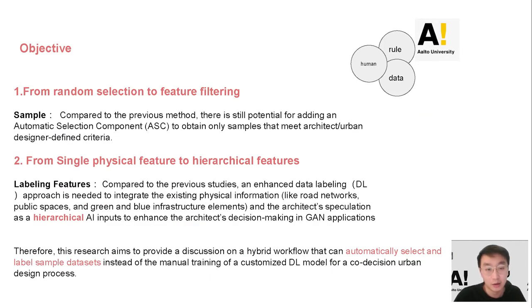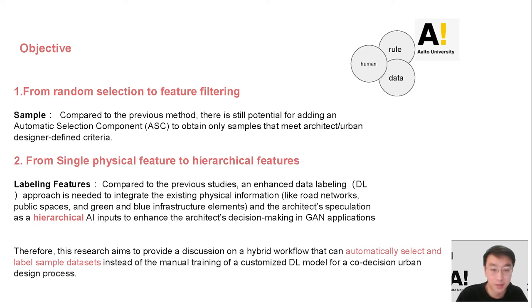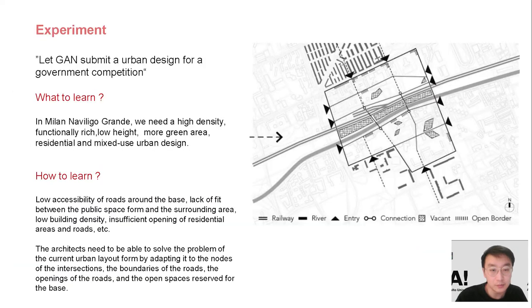Our goals are: first, to move from random selection to feature filtering; and second, an enhanced data labeling approach is needed to integrate existing physical information and architect's speculation as AI input to enhance architecture design-making in GAN. We want this entire process to be automated, letting GAN assist in urban design computation.